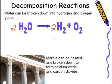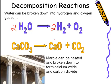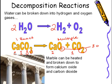Marble can be heated and broken down to form calcium oxide and carbon dioxide. We take CaCO3, yielding CaO plus CO2. Again, one reactant, multiple products. If we want to balance this equation, we have one calcium on the left side, one calcium on the right side. We have one carbon on the left side, one carbon on the right side, three oxygens on the left, and one, two, three oxygens on the right. So this equation is balanced.